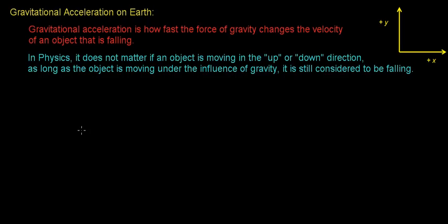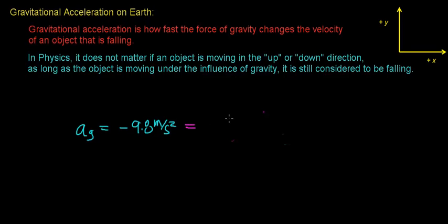Now on Earth, experiments show that the acceleration due to the force of gravity equals negative 9.8 meters per second squared, or negative 9.8 meters per second per second. This value varies depending on where you are on Earth or how high above the surface you are. Another way to think about this is that the force of gravity causes all objects on Earth to accelerate at negative 9.8 meters per second every single second that the object is falling.